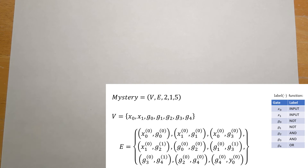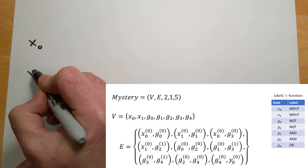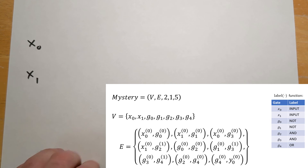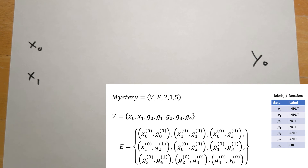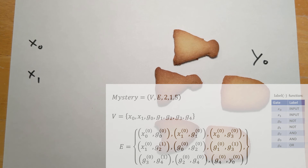Now let's try to figure out what our mystery function actually is. We're going to take our representation and try to draw the picture that corresponds to it. We know there are going to be two inputs, x0 and x1, and one output, y0. We also have two NOT gates, two AND gates, and one OR gate. We'll use our edges to figure out exactly how they connect with one another.